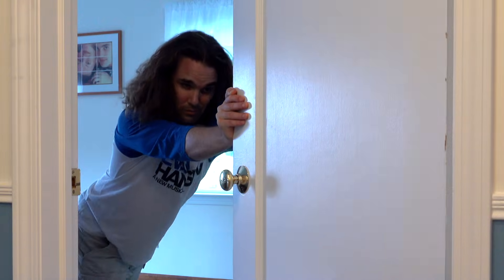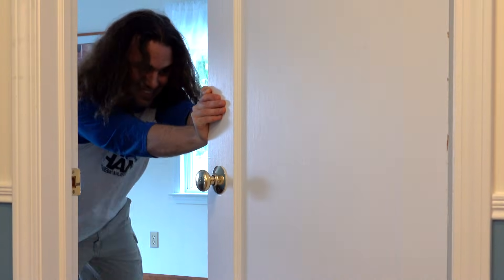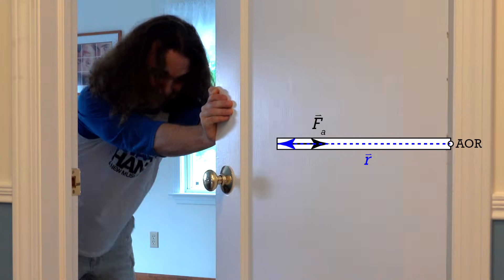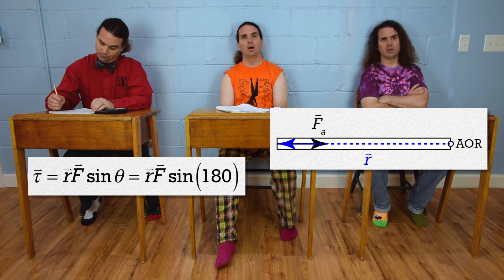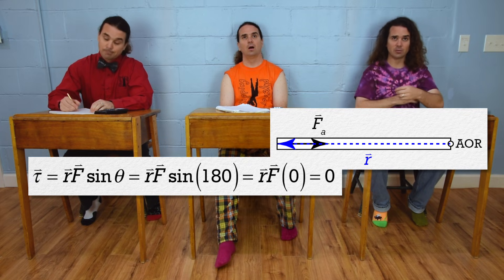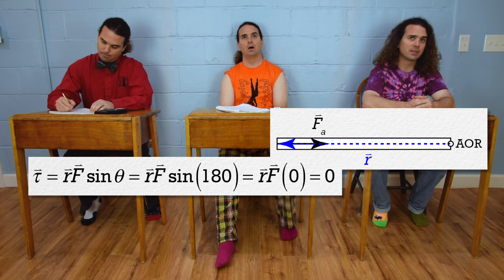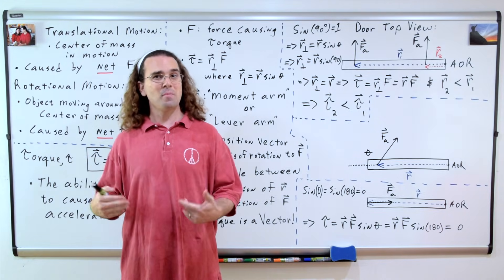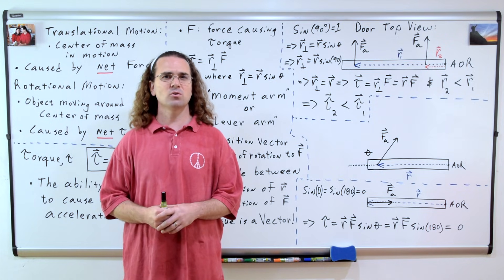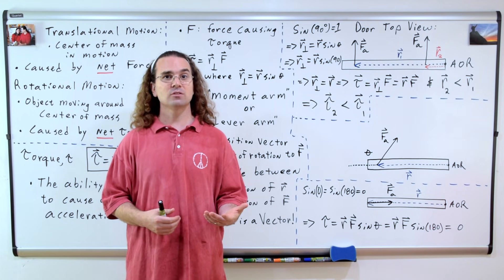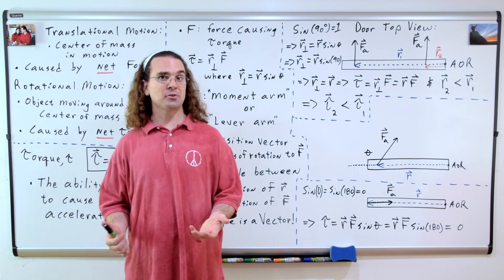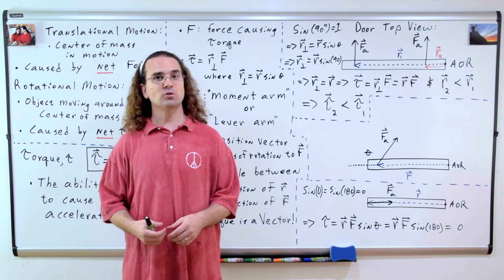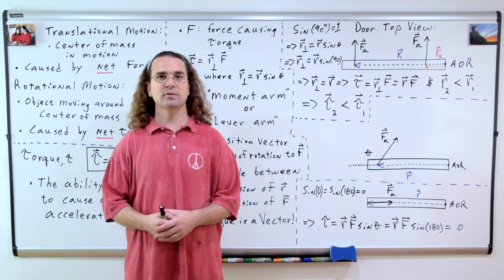One last example of how you will never try to open a door. Bo, why will you never try to open a door by pushing on the side of the door like this? In that case, the angle between the R value and the force applied is 180 degrees, and the sine of 180 degrees is zero. So no matter how hard you push, that will never cause a torque on the door. Correct. No matter how hard I push or even pull on the side of the door, the angle will be either 180 degrees for a push or zero degrees for a pull. The sine of zero and 180 degrees are both zero, so there is no torque and no ability to cause an angular acceleration of the door.